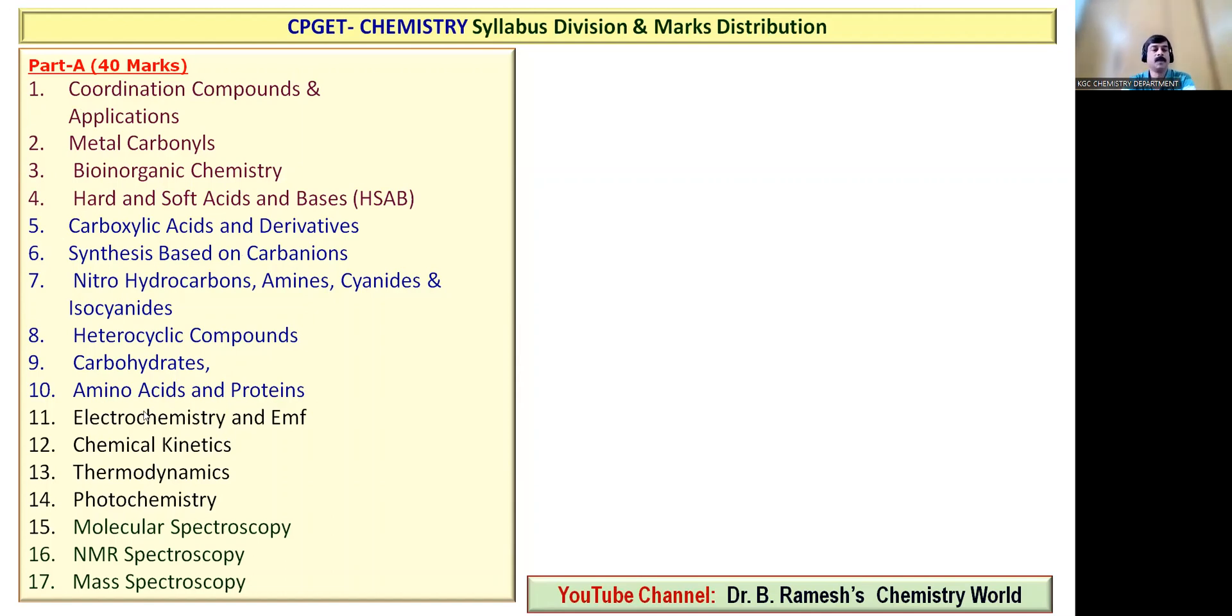Amino acids and proteins. Then in physical chemistry you have electrochemistry, chemical kinetics, thermodynamics, photochemistry. And you also have spectroscopy topics like molecular spectroscopy, NMR spectroscopy and mass spectroscopy.